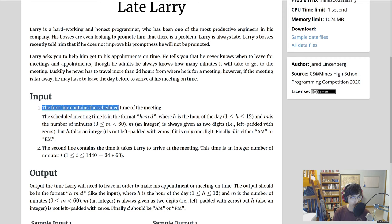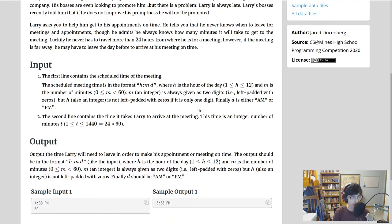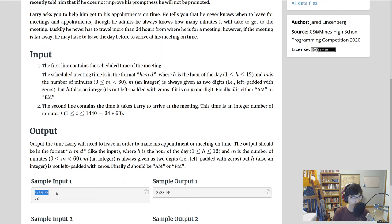The first line is going to contain the scheduled time of the meeting. Look at the sample input as you're looking at the input and output sections — that's a really good technique to understand what's going on. From the sample input, you can see it's going to be 12-hour format with AM and PM.